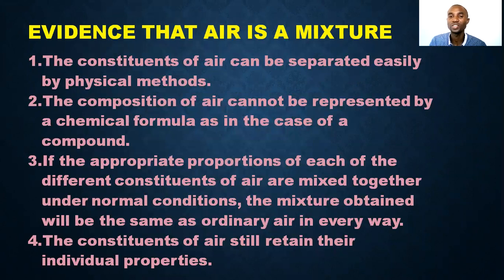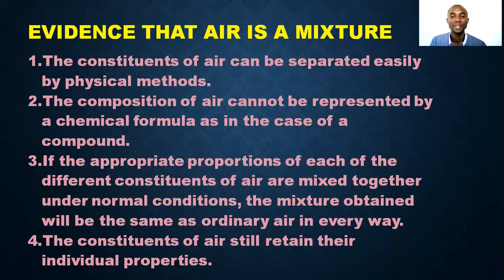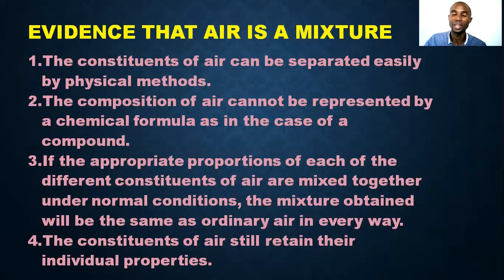What evidence shows that air is a mixture? Number one: the constituents of air can be separated easily by physical method. A compound cannot be separated by physical method, but the constituents of air can — that is proof number one. Number two: the composition of air cannot be represented by a chemical formula, as in the case of a compound. There is no formula for air.